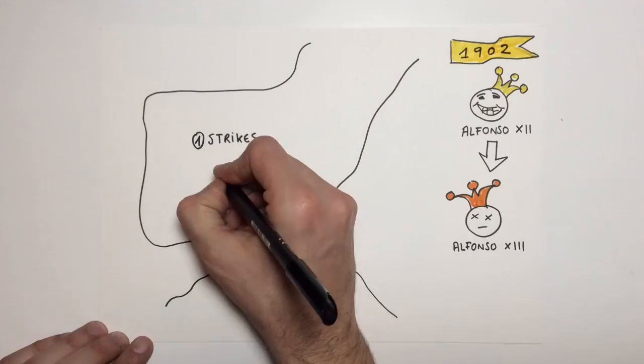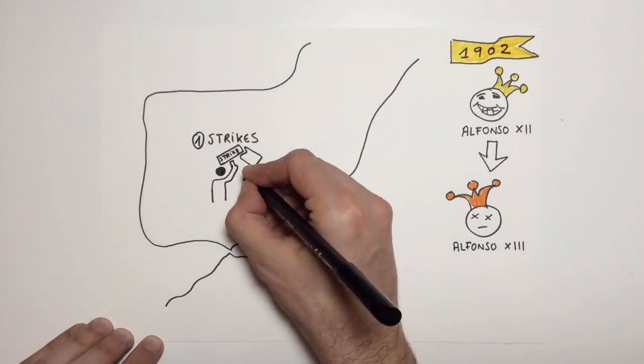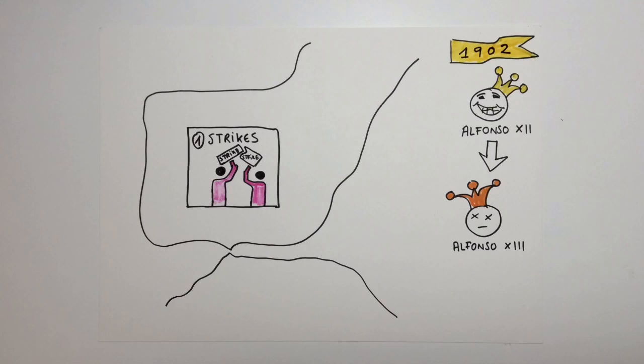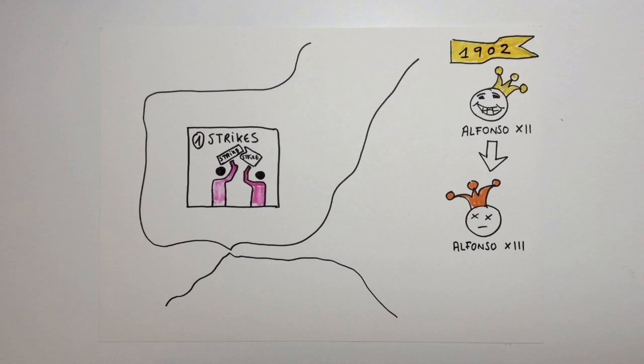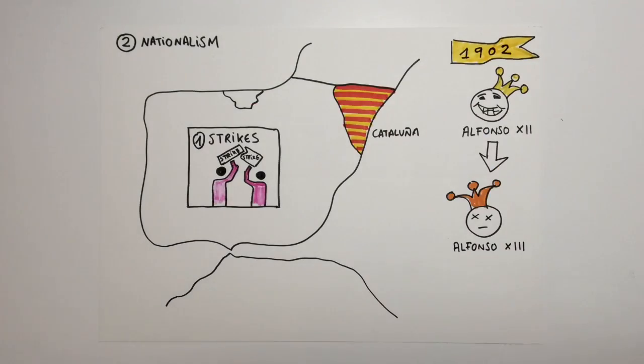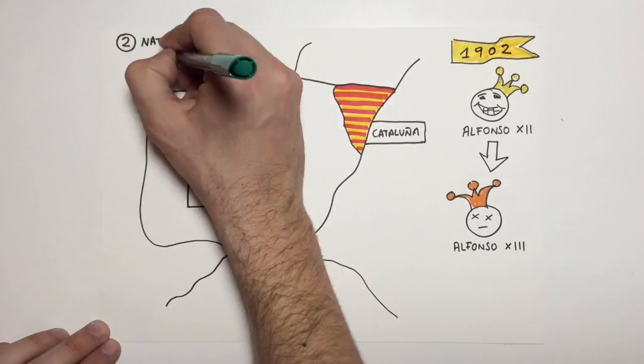During his reign, social and political conflicts in Spain are going to happen. Strikes organized by labor unions, the nationalism in Catalonia and País Vasco, where they are going to demand autonomies.